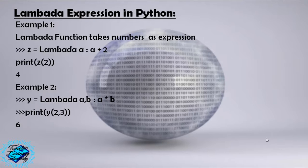Example number two: Y equals Lambda a, b: a multiplied by b. print(Y(2, 3)) — we will get six.